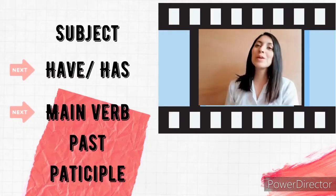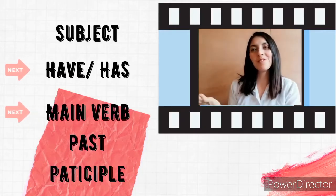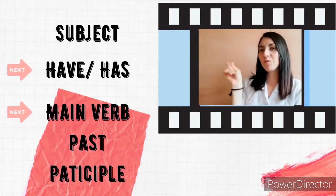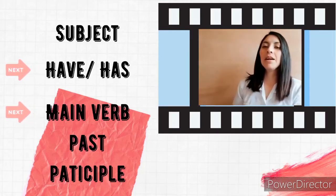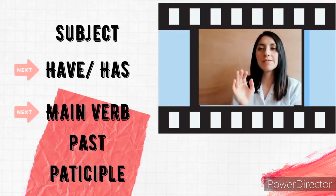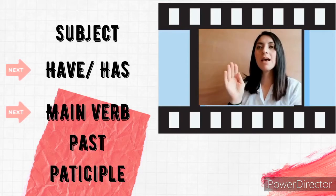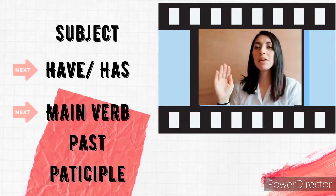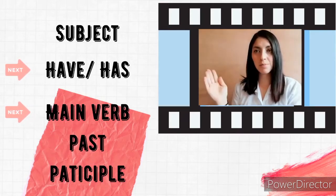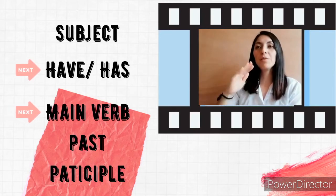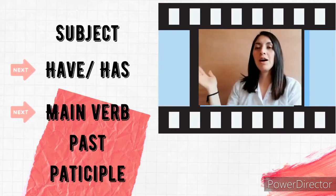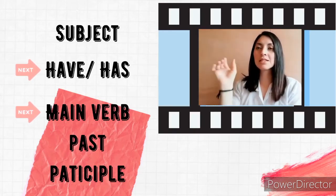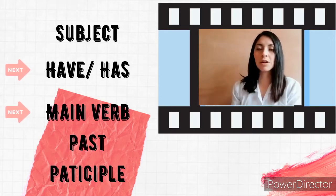Hi guys, so it's going to be present perfect today. I'm going to give you the form right here. You can see that it's subject plus have or has plus the main verb in past participle. Before we move on, I just want to make sure you guys understand each part of the structure.